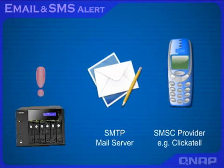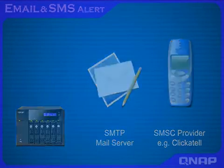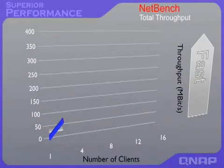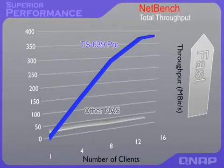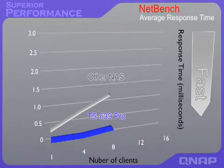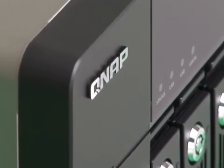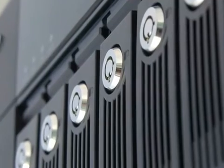The SMS and email alert feature enables you to receive real-time SMS or email notifications when there is a system error or warning. NetBench test results show that the TS639 Pro is able to deliver over 390 Mbps when serving 16 clients, with an average response time much faster than other NAS models at the same level. The TS639 Pro TurboNAS is the most reliable and secure network storage solution for your business environment.